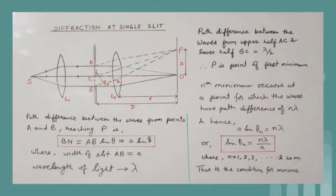Similarly, the nth minimum occurs at a point for which the path difference between the waves is n lambda, so that A sin theta_n is equal to n lambda, or sin theta_n is equal to n lambda by A, where n = 1, 2, 3, and so on. This is the condition for successive minima.